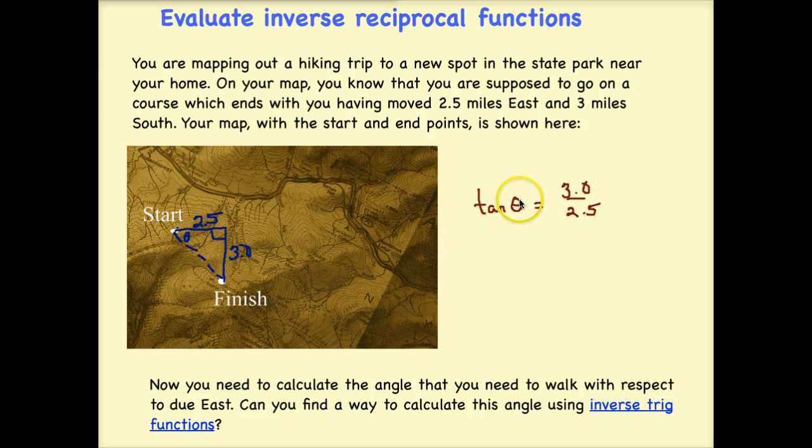How can we solve that? We know that if we take the inverse, we can find the angle. All we need to do is multiply both sides by the inverse tangent. We know that if we take the inverse of the tangent here, we'll just be left with theta. So theta will equal the inverse tangent of 3.0 over 2.5.